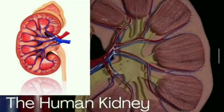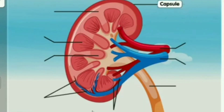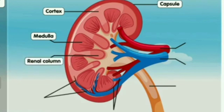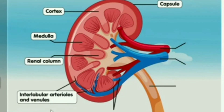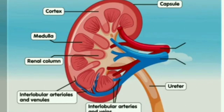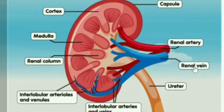Capsule. Cortex. Medulla. Renal column. Interlobular arterioles. Interlobular arteries and veins. Urine. Renal artery. Renal vein.